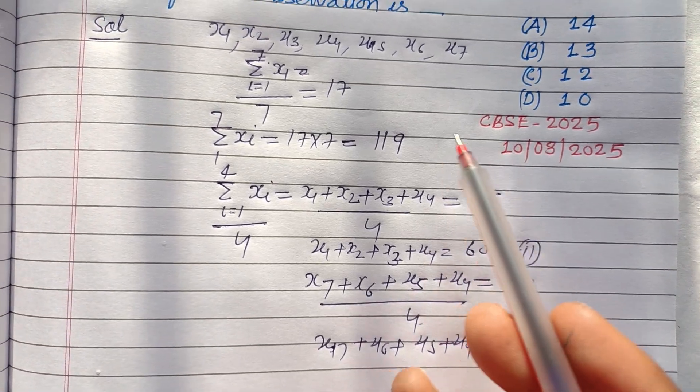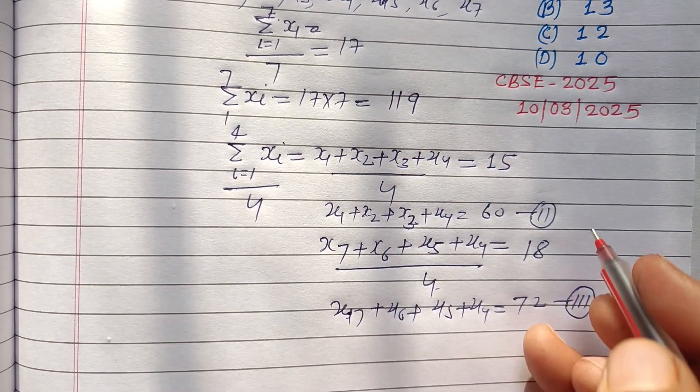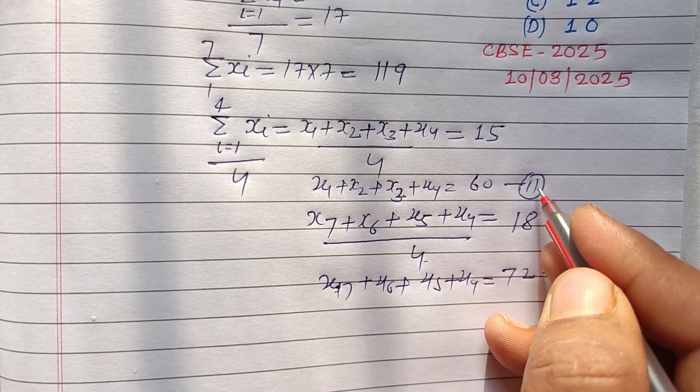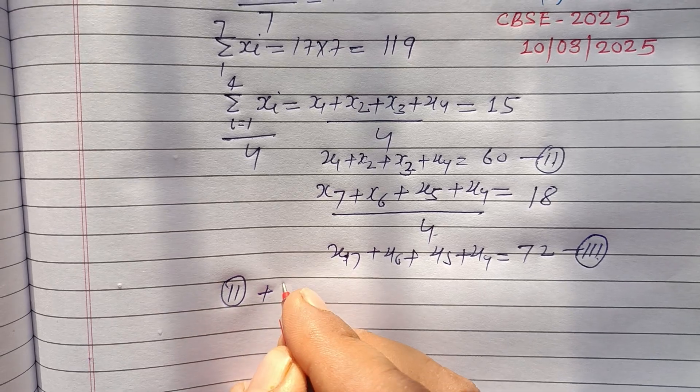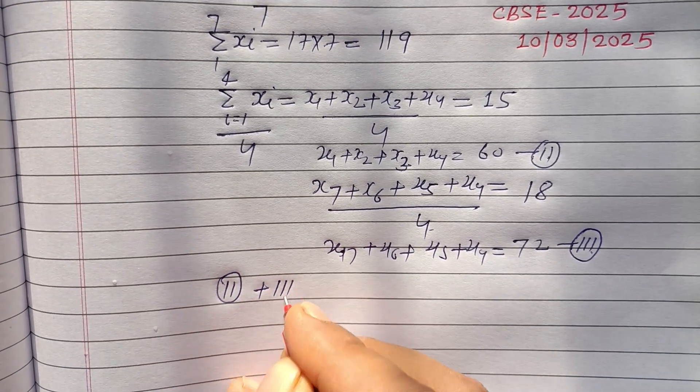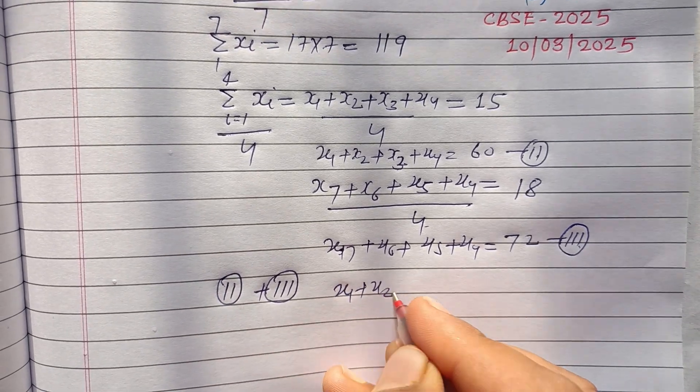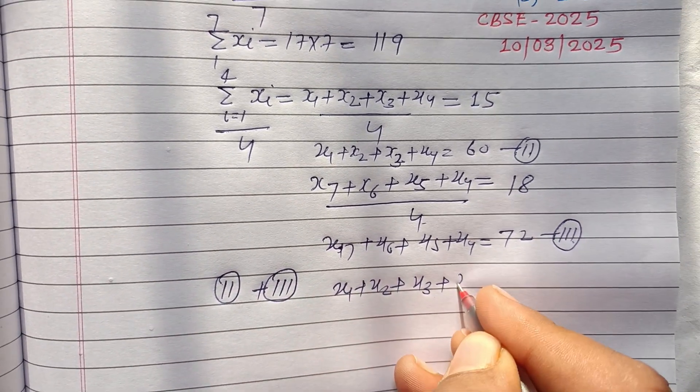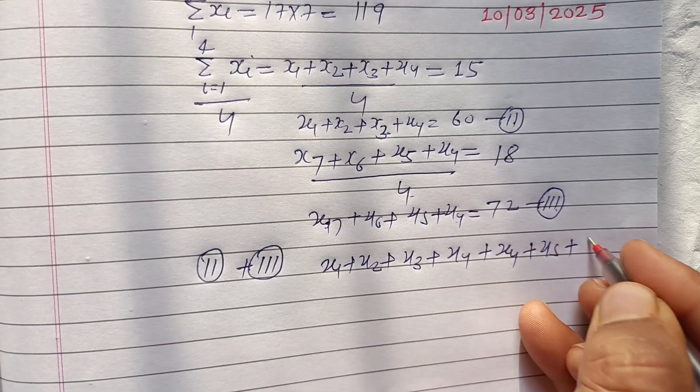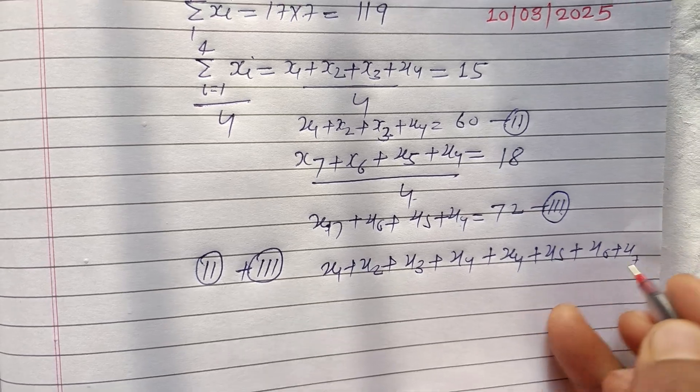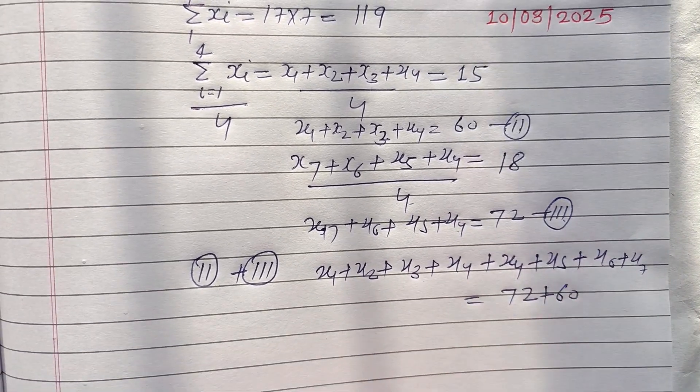Now, the question is asking to find the fourth observation. So we add the second and third equations. So we get x1 plus x2 plus x3 plus x4, and from this x4 plus x5 plus x6 plus x7. So this is 72 plus 60.